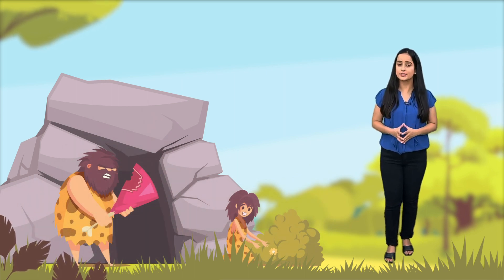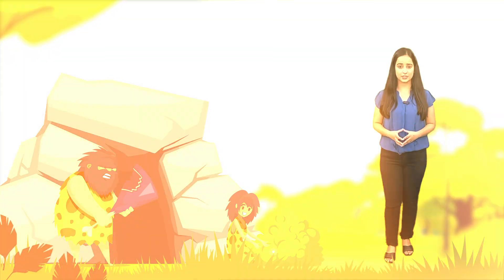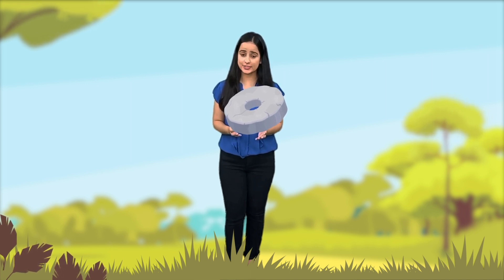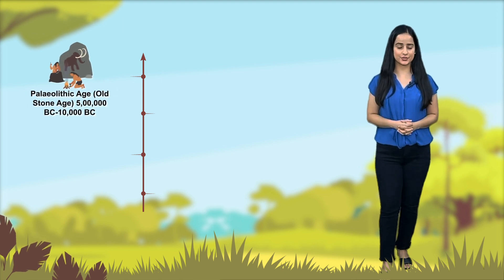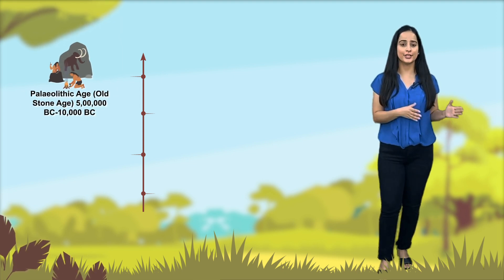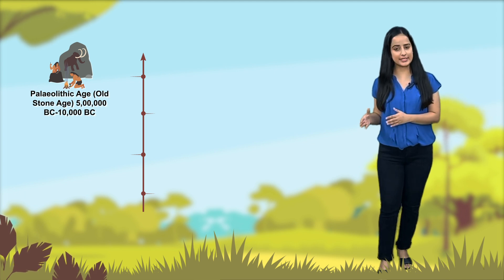This period is also called the Stone Age because stone was the only material that was widely in use for making tools. Based on the type and quality of tools used by early man, the Stone Age is divided into four phases.